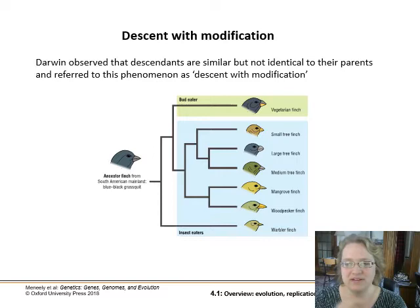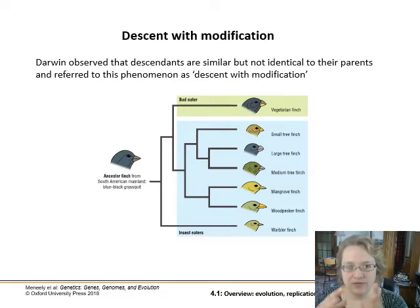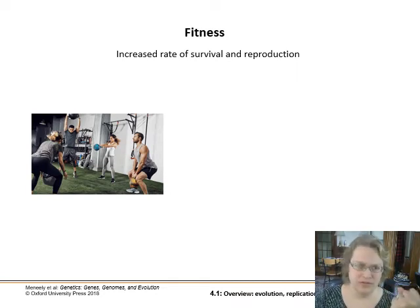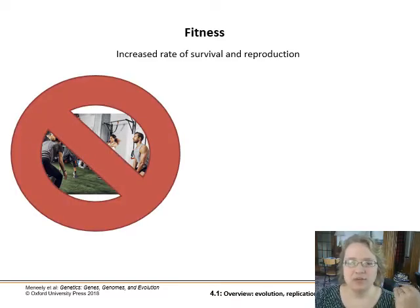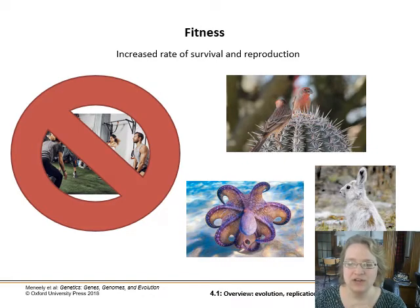This is the idea of descent with modification. Darwin observed this phenomenon where descendants are similar but not identical to their parents. Regarding biological fitness — this doesn't mean physical strength or 'survival of the fittest' in the popular sense. An organism's fitness is the fact that it survived to reproducing age, had children, who then went on to have lots of grandchildren. Fitness is surviving to reproduce and how well you reproduce.